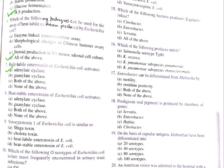Question number 8: heat-stable enterotoxin of Escherichia coli activates — A. Adenylate cyclase, B. Guanylate cyclase, C. Both of the above, D. None of the above. This is the ST toxin. The ST toxin activates guanylate cyclase, which converts GTP producing cyclic GMP, while the previous heat-labile toxin activates adenylate cyclase converting ATP into cyclic AMP. So the correct option is B, guanylate cyclase.